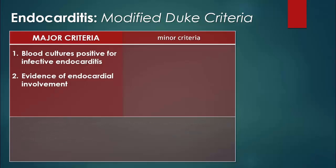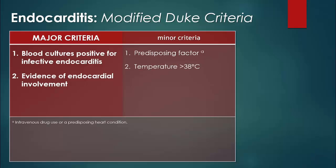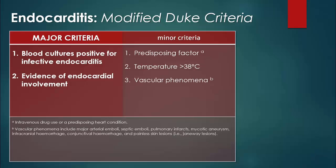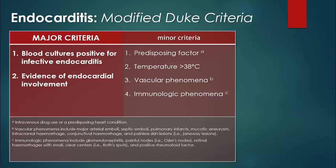There are five minor criteria for endocarditis. A predisposing factor such as IV drug use or a predisposing heart condition. A temperature of greater than 38 degrees Celsius. Vascular phenomena such as major arterial emboli, mycotic aneurysm, and Janeway lesions. Immunologic phenomena such as Osler nodes, Roth spots, and positive rheumatoid factor.